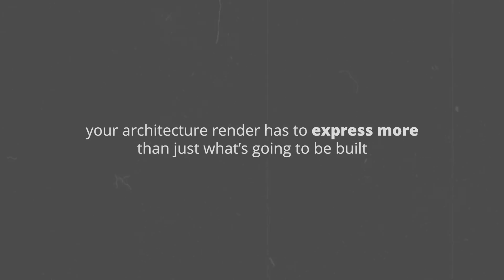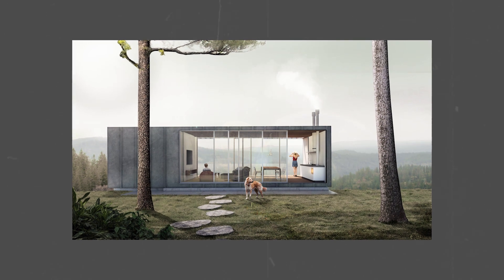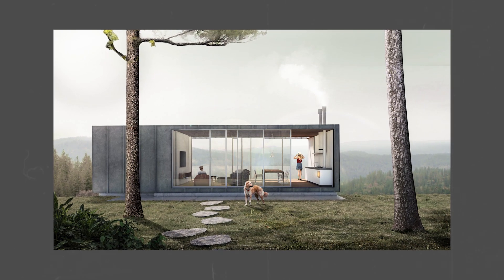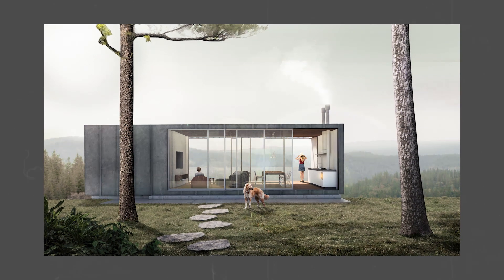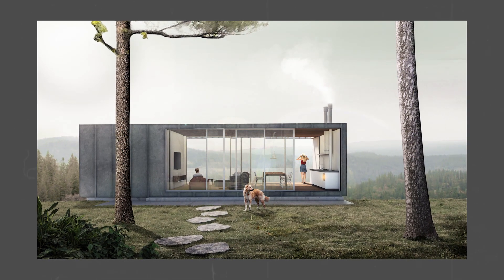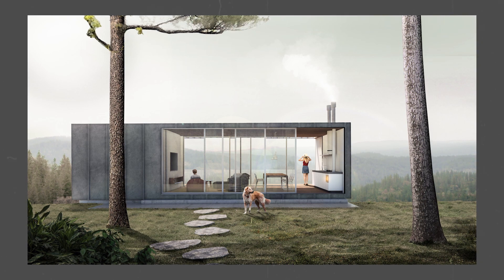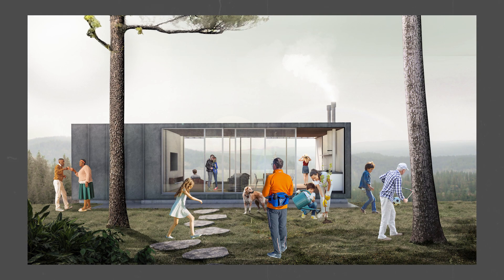Talking about depth leads me to the third item, which is story. Your architecture render has to express more than just what's going to be built — it has to tell a story, portray an atmosphere, a mood. These stories have to be subtle; it's not a comic book by any means. For example, the image we did in the post-production course shows a couple enjoying their weekend at this cabin: she's looking over the valley while he might be relaxing in the living room, the oven is turned on cooking something as smoke blows off with the wind. It's subtle, but it's there. It would be a completely different mood if I had placed the people in other activities or overcrowded the place. Usually cutouts will better help you represent these moods and stories, but that's not an obligation.